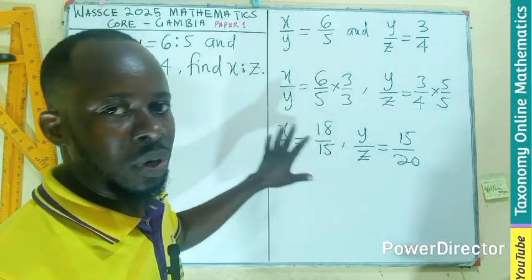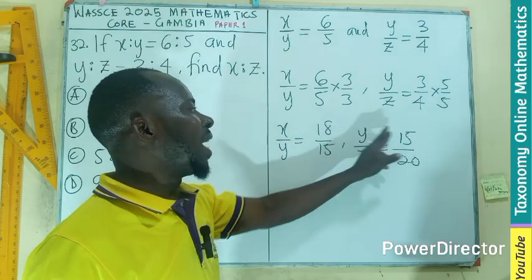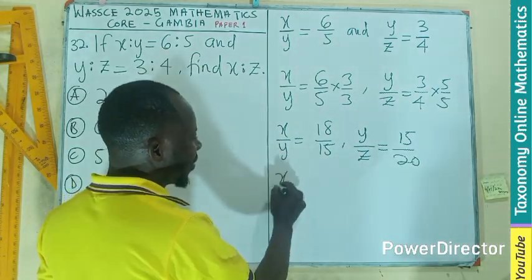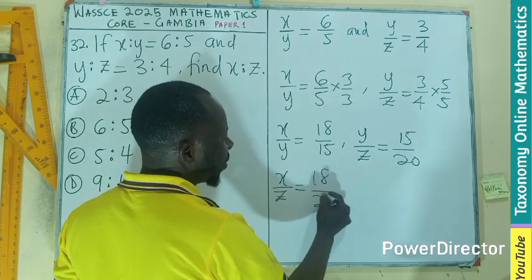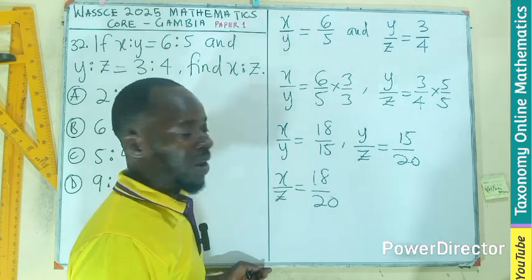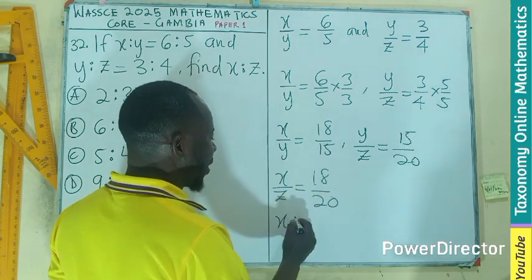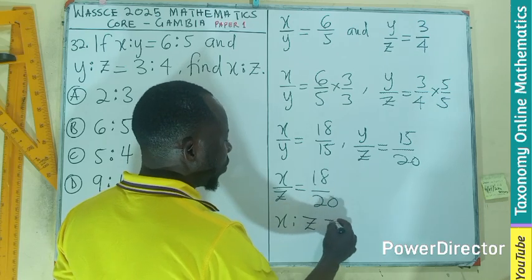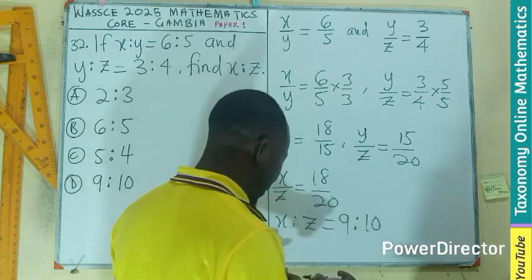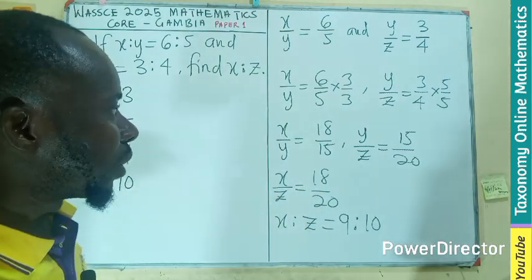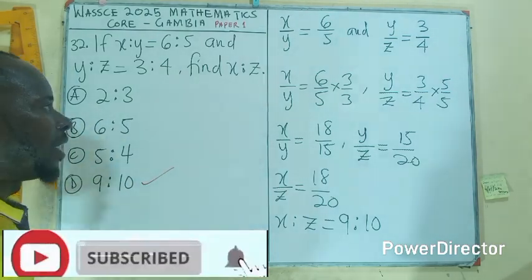So these proportions are now perfect — the value of y here is 15, and it's 15 there. That means x divided by z will be the x value divided by the z value. Looking for the common factor of 2, x is to z will just be 9 is to 10. That is the answer, and it is going to be option D.